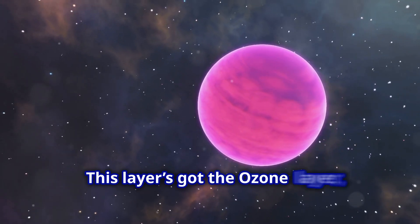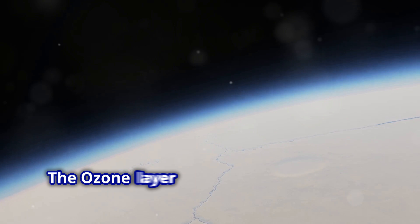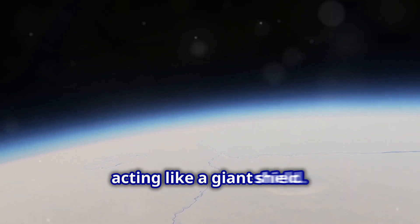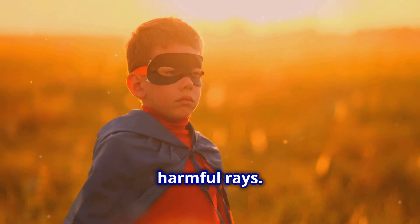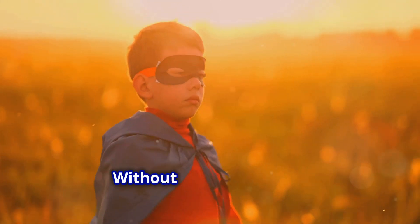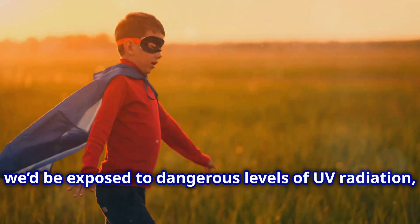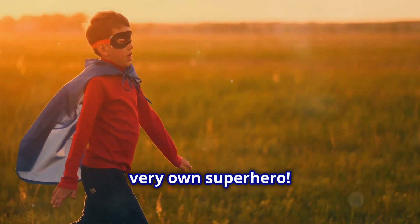This layer's got the ozone layer, which is super important for protecting life on Earth. The ozone layer absorbs and scatters the sun's harmful ultraviolet rays, acting like a giant shield. Our superhero shield blocking the sun's harmful rays. Pretty cool, huh? Without the ozone layer, we'd be exposed to dangerous levels of UV radiation, which could harm our skin and eyes. So, the stratosphere is like our planet's very own superhero.